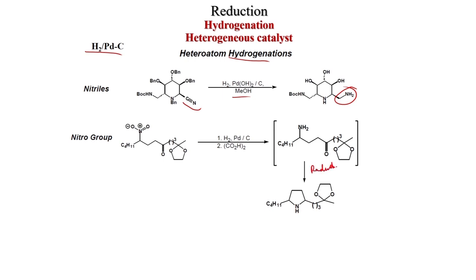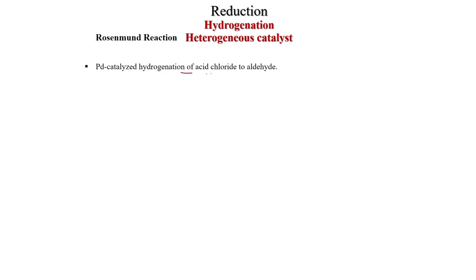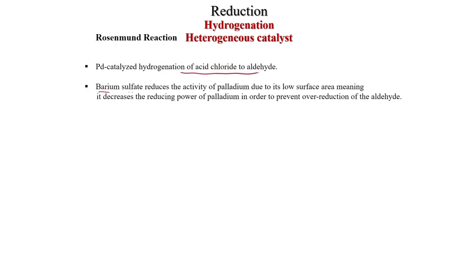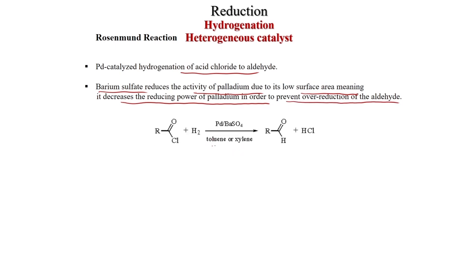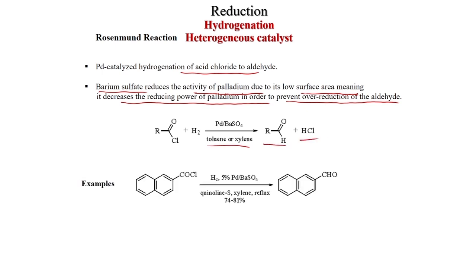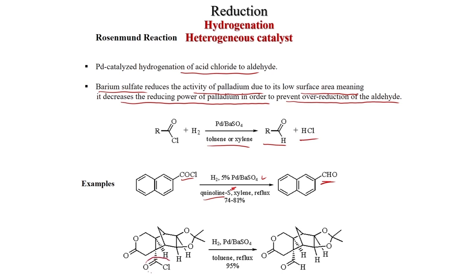Azides can also be reduced to amines. Now we will discuss the Rosenmund reaction: this is palladium-catalyzed hydrogenation of an acid chloride to an aldehyde. Barium sulfate reduces the reactivity of palladium due to its low surface area, decreasing its reducing power to prevent over-reduction of the aldehyde. Reaction: RCOCl + H2 with Pd/BaSO4, toluene or xylene gives the aldehyde and HCl. Example: a carbonyl chloride is reduced to aldehyde with H2, 5% Pd/BaSO4, quinoline, xylene under reflux. In the substrate — with acid chloride, lactone, and ketone present — selectively the acid chloride is reduced to the aldehyde.